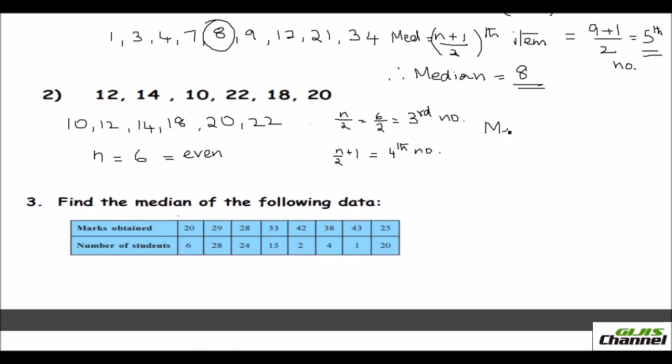So median is equal to, third number is 14. This is equal to 14, and the fourth number here is 18. So median will be 14 plus 18 over 2. So that will give you 32 over 2, and the median is 16. 16 is your answer.